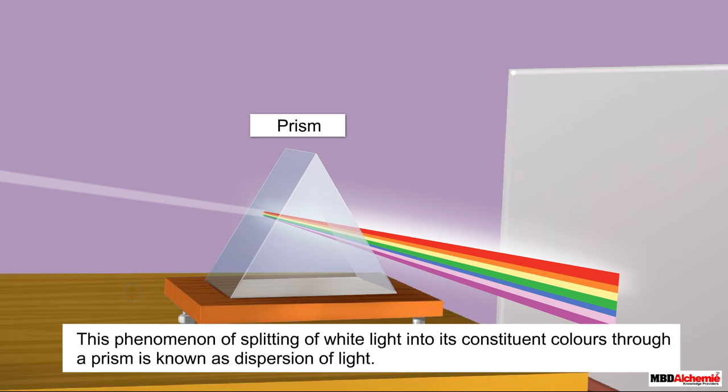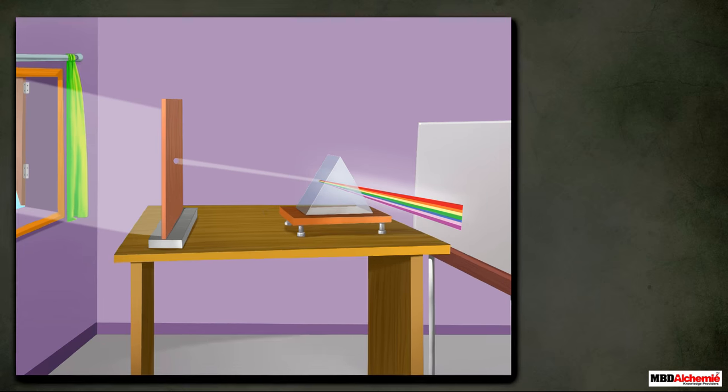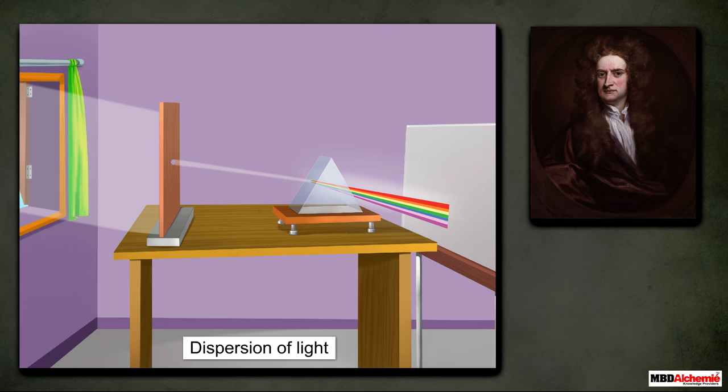The band of constituent colors is known as the spectrum. This phenomenon was first discovered by Sir Isaac Newton.